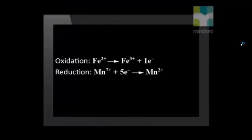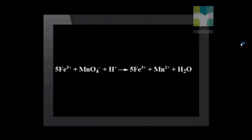Now we need to balance the number of electrons that are lost and gained in the two half reactions. In the reduction half reaction, 5 electrons are gained, while in the oxidation half reaction, only 1 electron is lost. So we multiply the oxidation half reaction by 5.